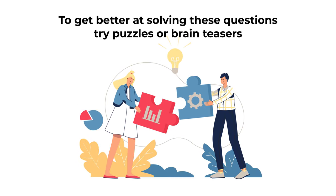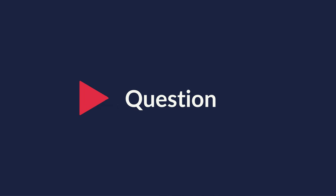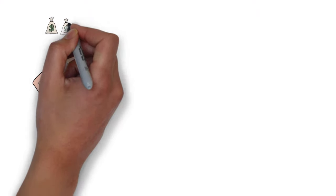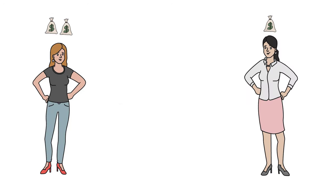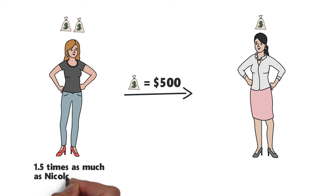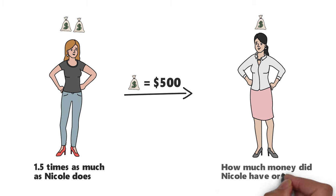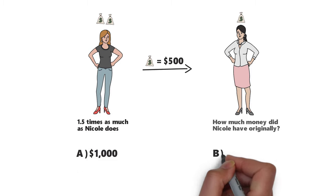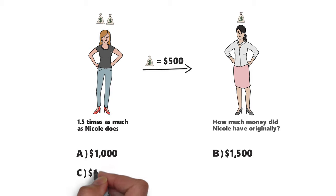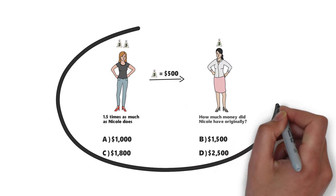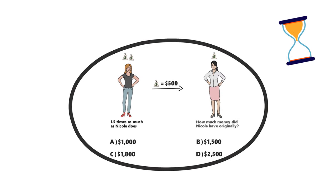Here is an interesting question which tests your understanding of money management. Sarah has twice as much money as Nicole. After Sarah loans $500 to Nicole, she will have 1.5 times as much as Nicole. How much money did Nicole have originally? Choices: A) $1,000, B) $1,500, C) $1,800, and D) $2,500. Give yourself 20 to 30 seconds.